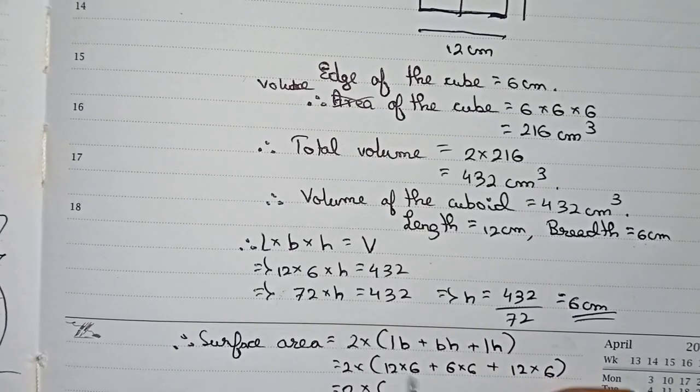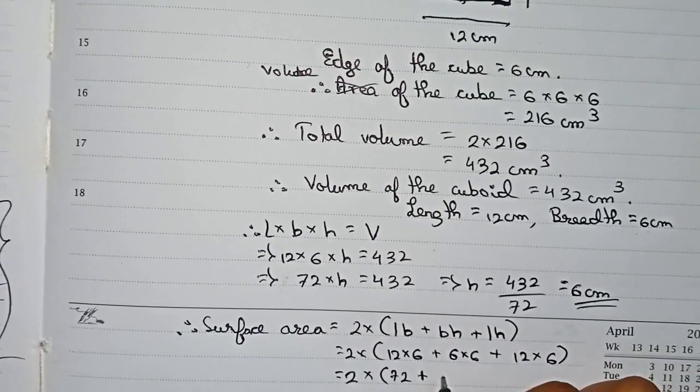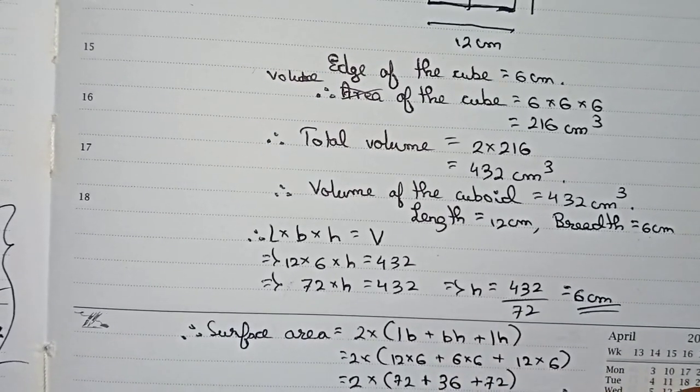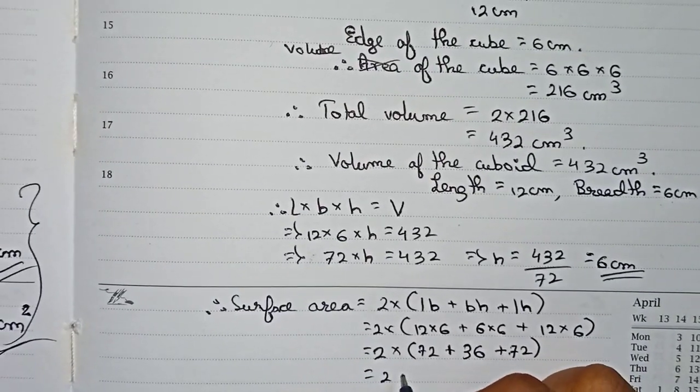2 into 12 into 6 is 72, plus 6 into 6 that will be 36, plus 12 into 6 is 72. Now you add this up: 72 plus 36 plus 72, it becomes 180.